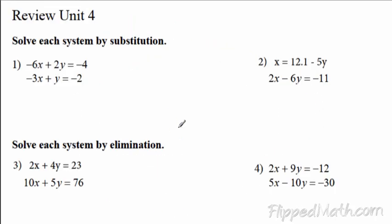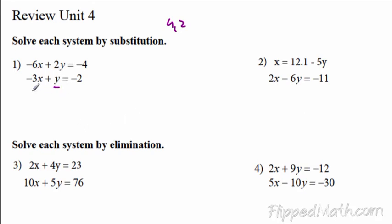So let's start looking at the review here. We're going to start by solving by substitution — section 4.2 — where you get one variable all by itself. For example, in number one, I see in both equations I probably want to get this y by itself, because it's isolated almost if you just add 3x to each side.